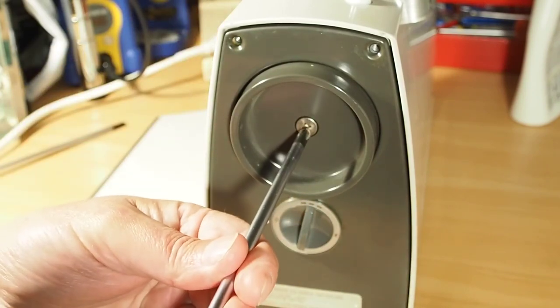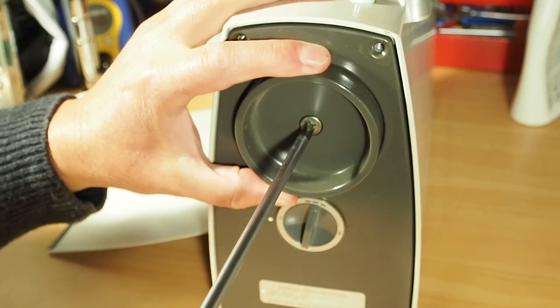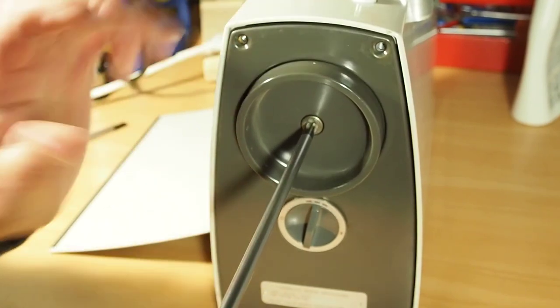And this is a standard Phillips screw on the end, so standard Phillips screwdriver. Just hold back on, hold the wheel, stop it from turning, and undo that screw.